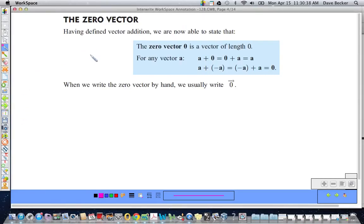Okay. The zero vector. We just defined vector addition. And this is just a very simple concept. The zero vector is a vector of length zero. Yes. That does exist. For any vector A, A plus zero equals zero plus A equals A. That makes sense.